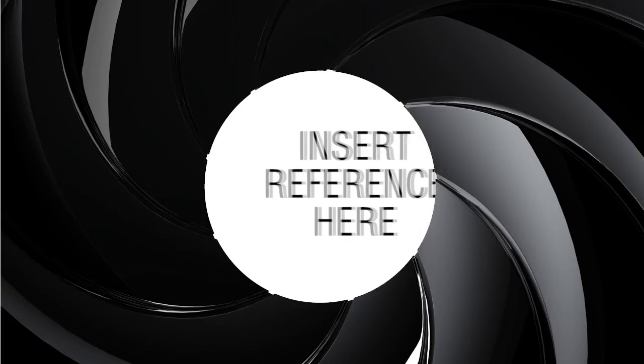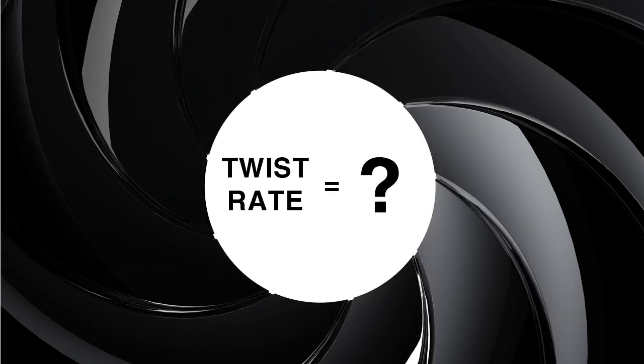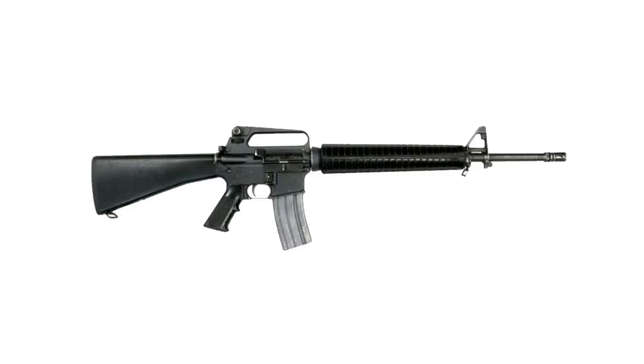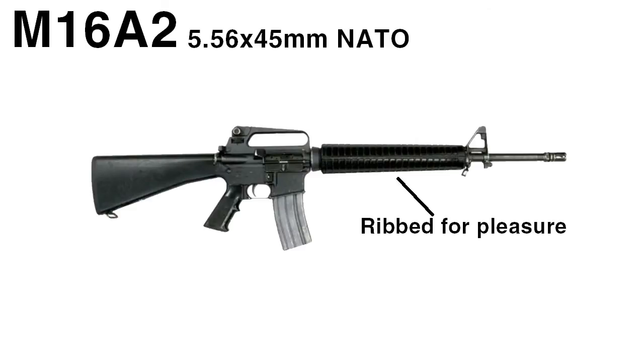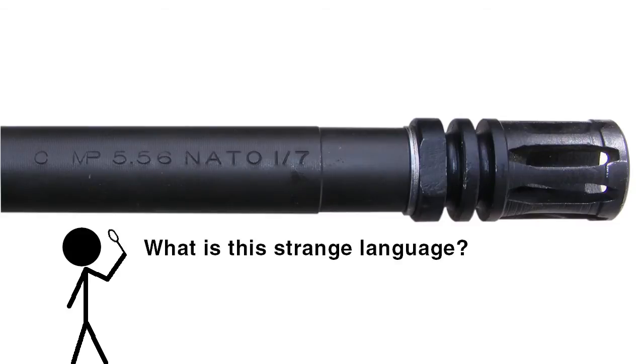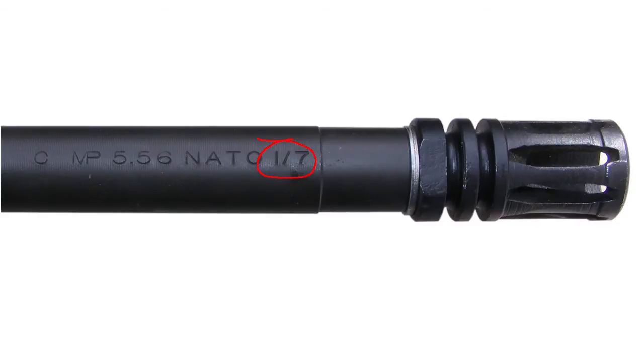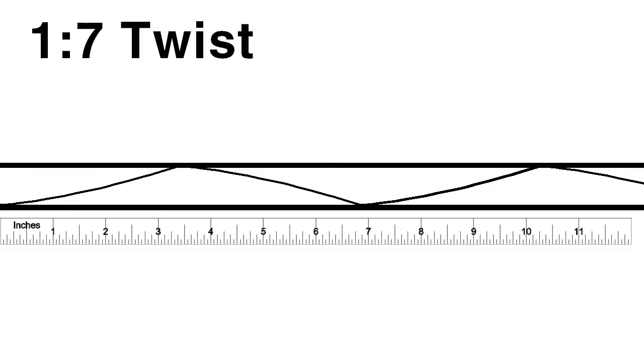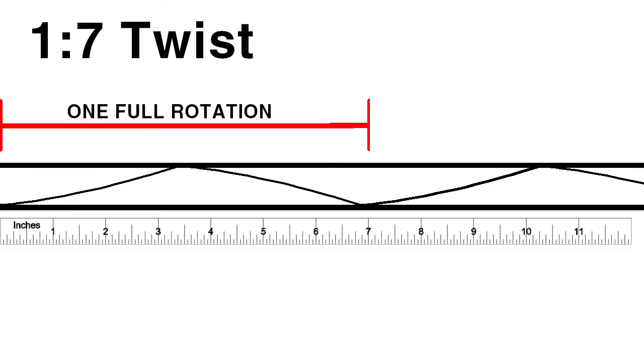For starters, we need some references of barrel twist rates and how they are represented. Let's take a look at the US Army's M16A2 for example. The barrel of a standard M16 should be marked with something like this. The important part is the 1 over 7. This is the barrel's twist rate. 1 in 7 simply means that the rifling makes one full revolution in 7 inches of the barrel's length.